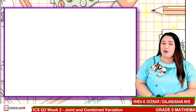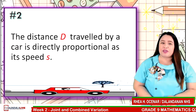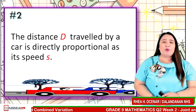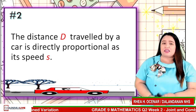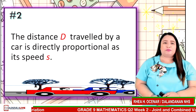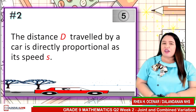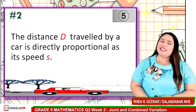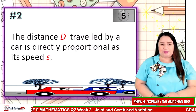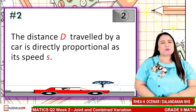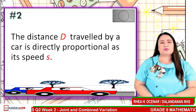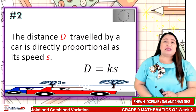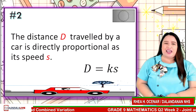Statement number 2. The distance D traveled by a car is directly proportional to its speed S. 5 seconds to answer. Timer starts now. The correct answer is D is equal to kS.